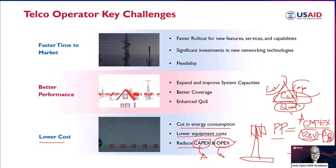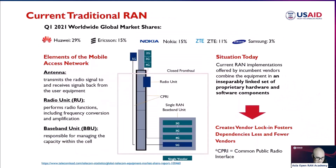Looking at worldwide market shares from Q1 2021: Huawei holds 29% of the worldwide market share, Ericsson has 15%, Nokia has 15%, ZTE has 11%, and Samsung has 3%.